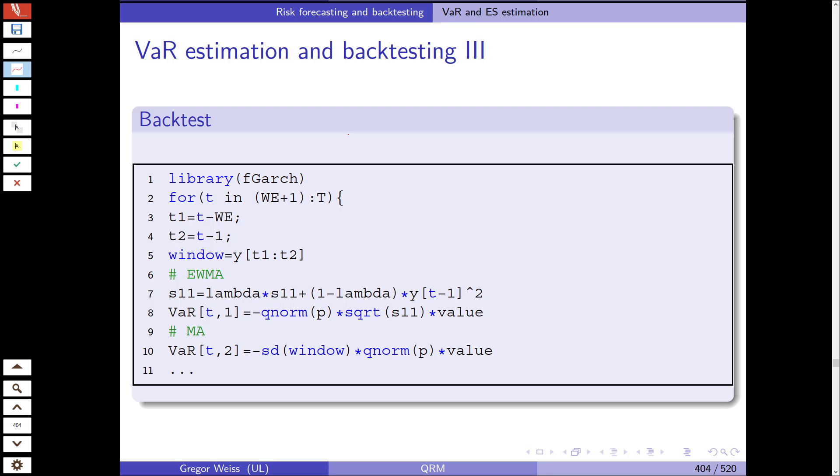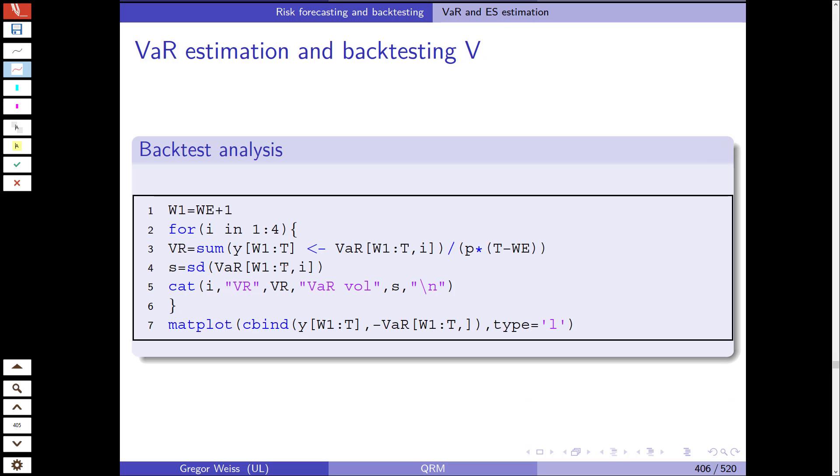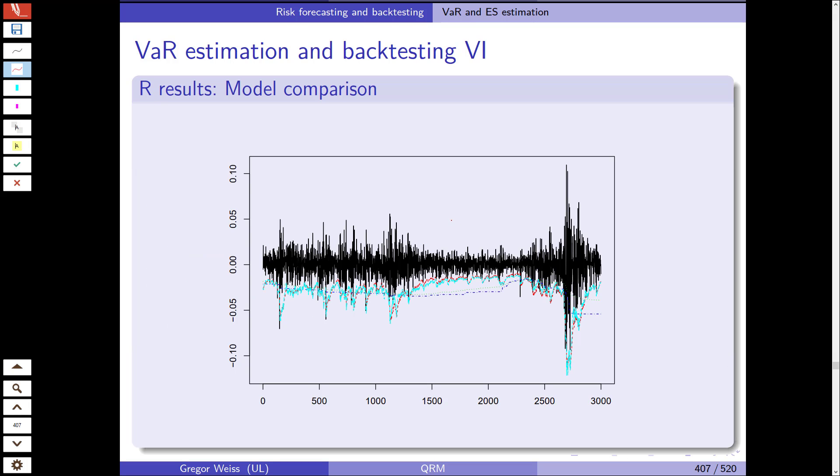We again load the FGARCH library, and what we now do is we do historical simulation with GARCH 1.1 fitting, we have the exponentially weighted moving average model. We get all those var models, and then we have to backtest them. So VR is the sum of returns lower than the var. We sum them up and we look at the var, this is the probability. We take the standard deviation, and then we plot all those estimates with the var, and this is what we get out of this.